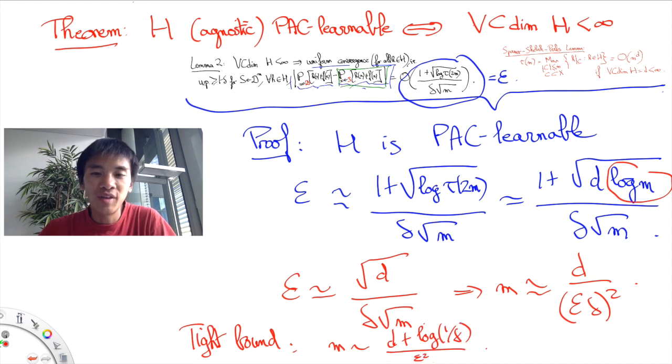However, the proof of this tighter bound is much more difficult to derive than the upper bound we derived. Nevertheless, it should be noted that in this formula, you can see that the effect of delta is pretty negligible. The critical values to focus on are rather the VC dimension D and the approximate correctness epsilon of the learned prediction function.